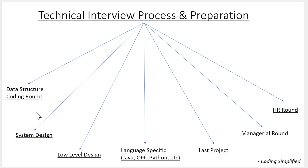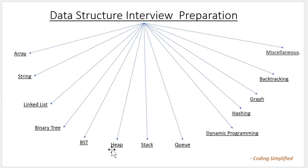The first main topic in technical interviews is the data structure, also called the coding round. This is very important. If you are a fresher, there will be two or three rounds for this. Even if you have three, four, or up to ten or more years of experience, at least one or two rounds will definitely be a coding round. They ask questions ranging across different data structure topics: arrays, linked lists, strings, binary trees, BST, heap, stack, queues, dynamic programming, hashing, graphs, backtracking, and more.